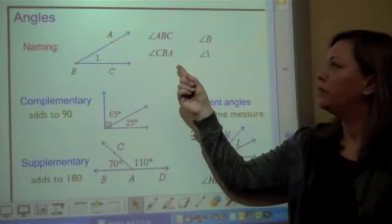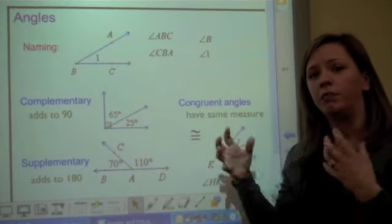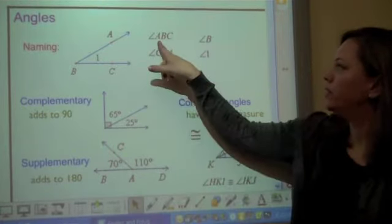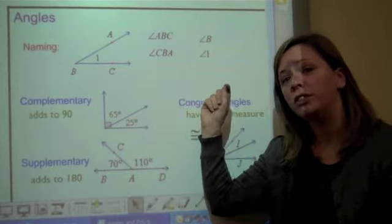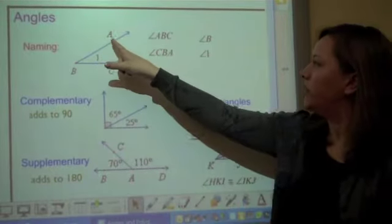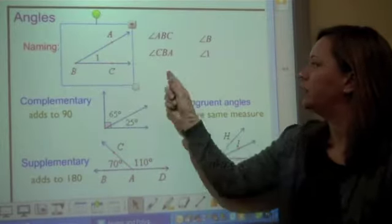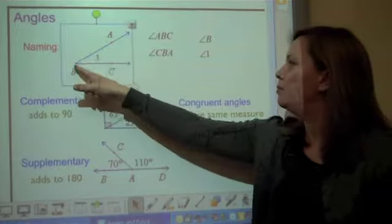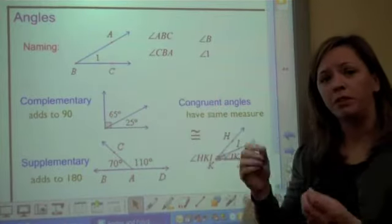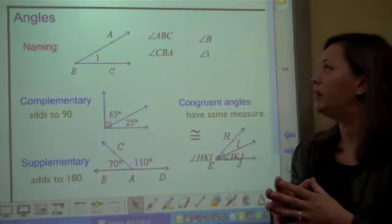So the first way you can name an angle is with three points on the angle. So here, for example, you see we have angle ABC. Now what's important about this is that the vertex is B, so angle ABC. So of course the other way we can name that angle is CBA. The vertex must be the middle letter when you're naming an angle.